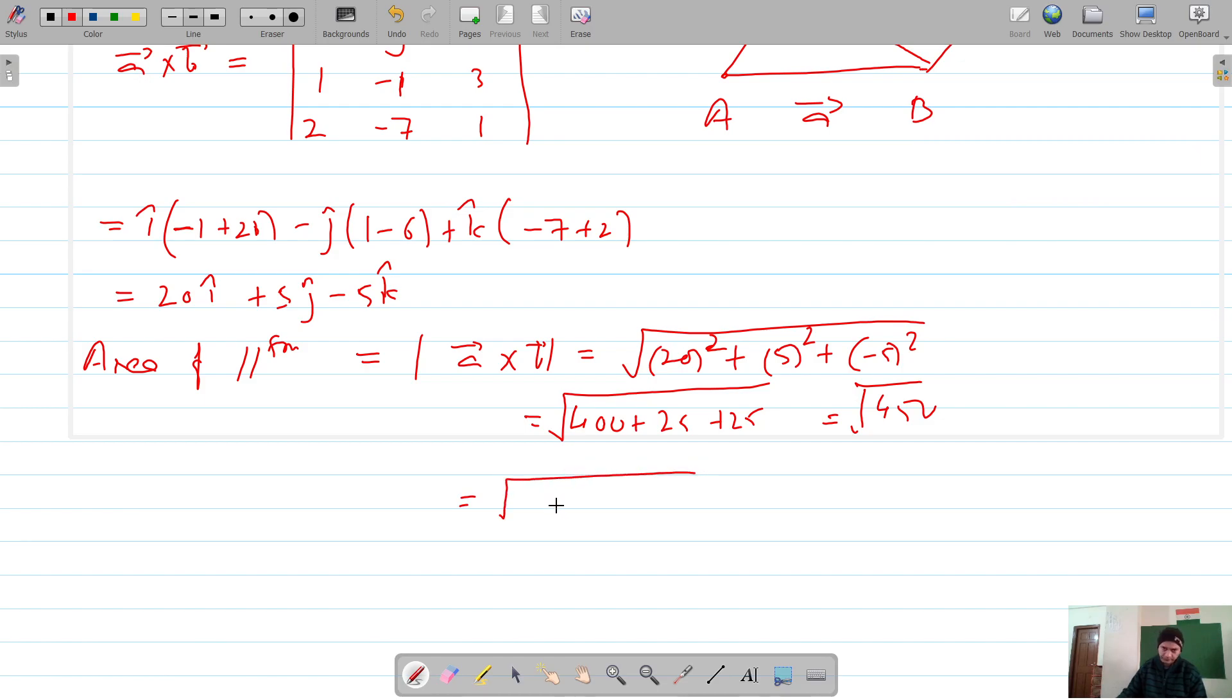it can be written as 9 times 5 times 10. The square root of 9 is 3, and 5 times 10 is 50, which is 25 times 2. So we get 3 times 5 times square root of 2, which is 15 root 2 square units.